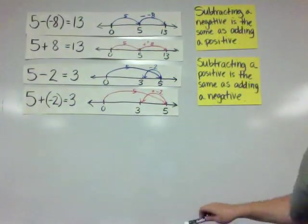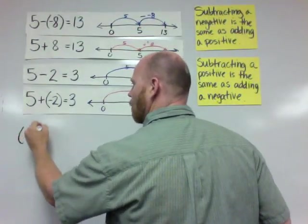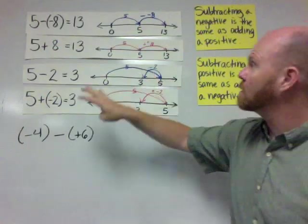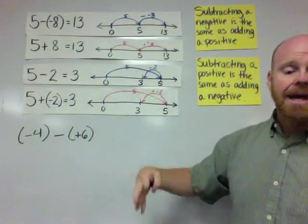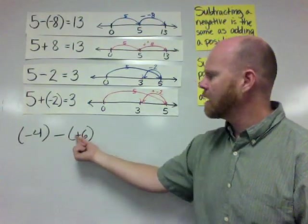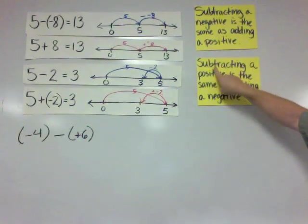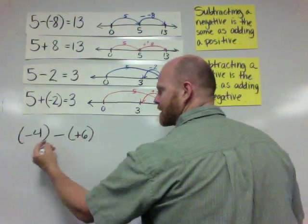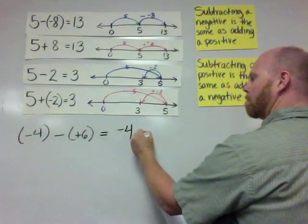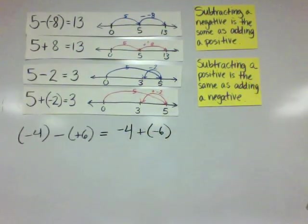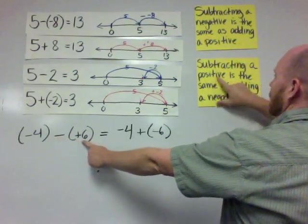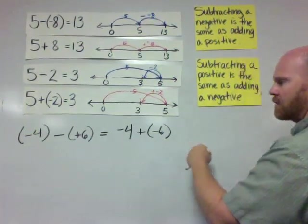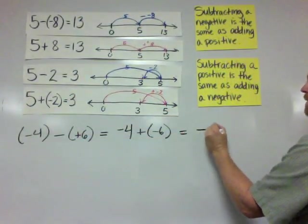Let's do a little bit of practice. We've got negative 4 minus positive 6. We want to take this subtraction problem and rewrite it as an addition problem. We are subtracting a positive, and subtracting a positive is the same as adding a negative. So negative 4 minus positive 6 is the same as negative 4 plus negative 6, which gives us two sets of hops to the left — the answer is negative 10.